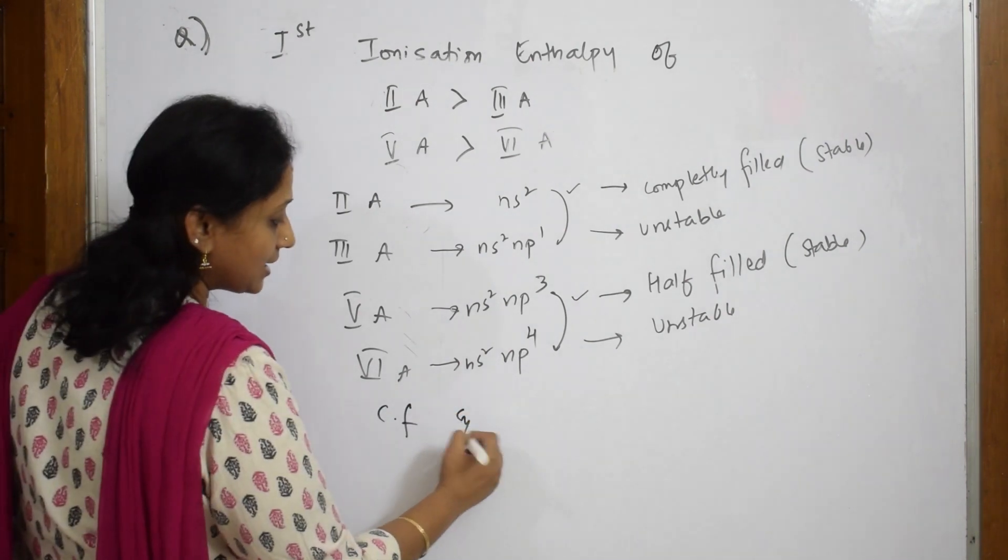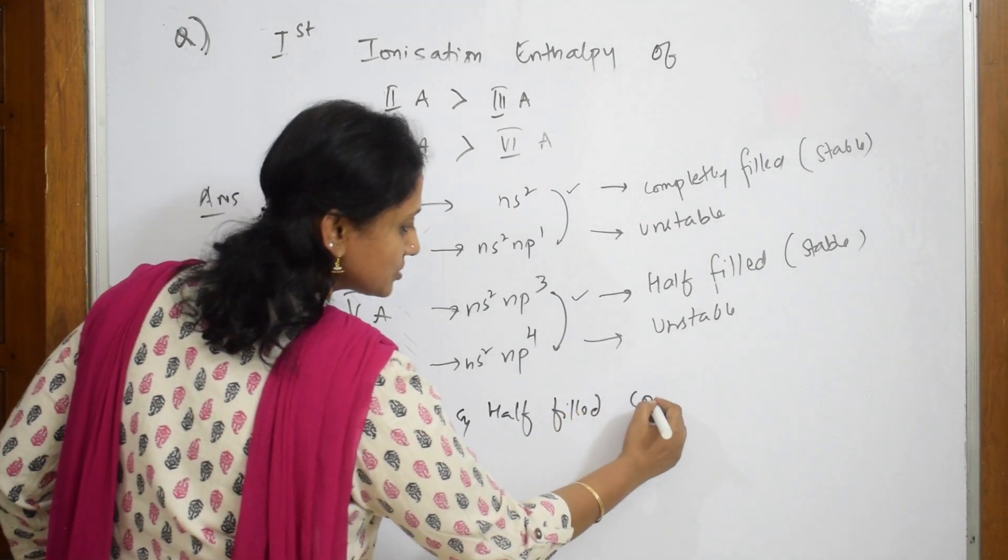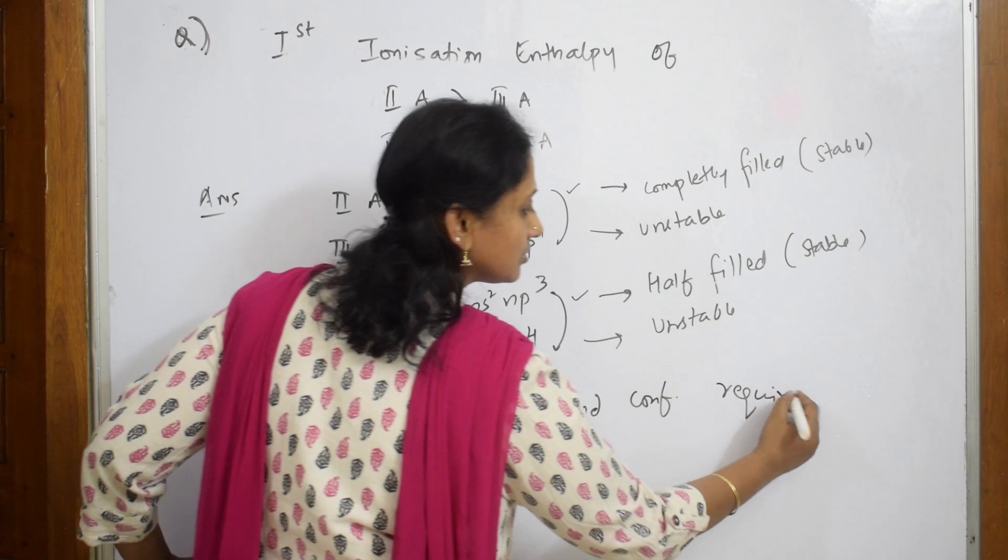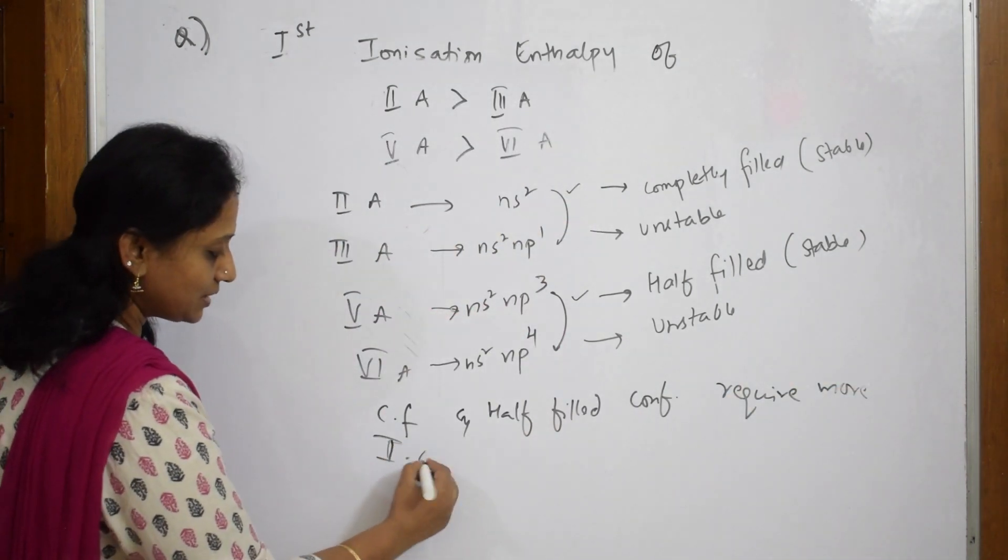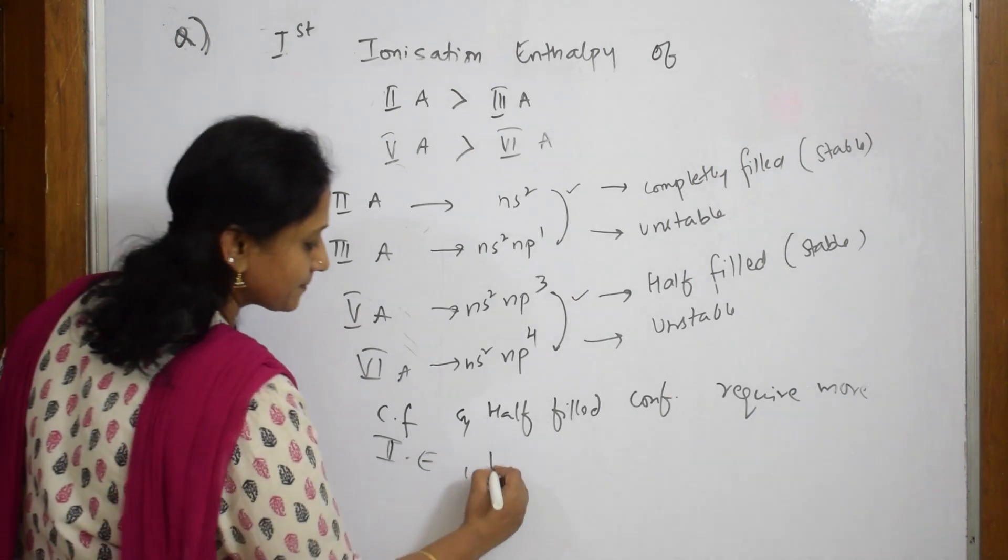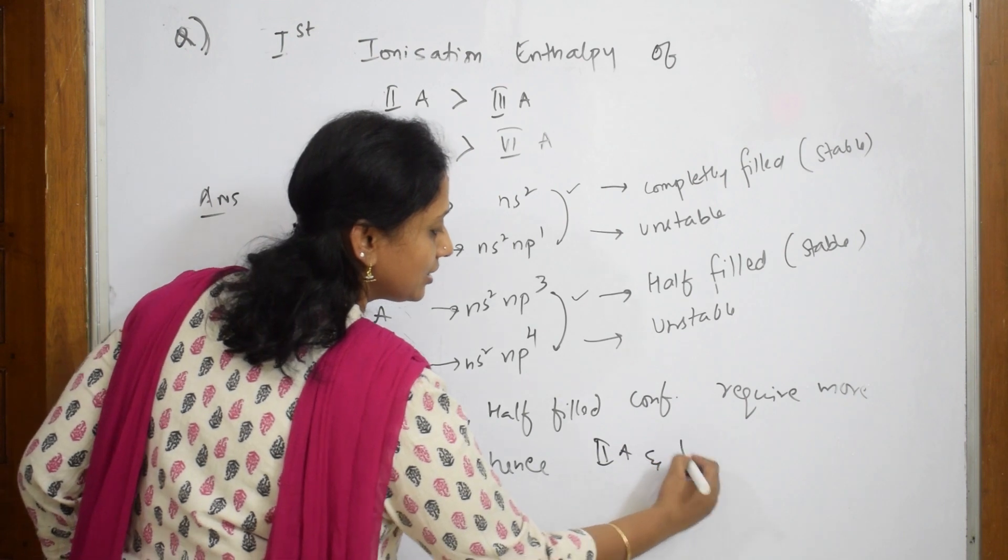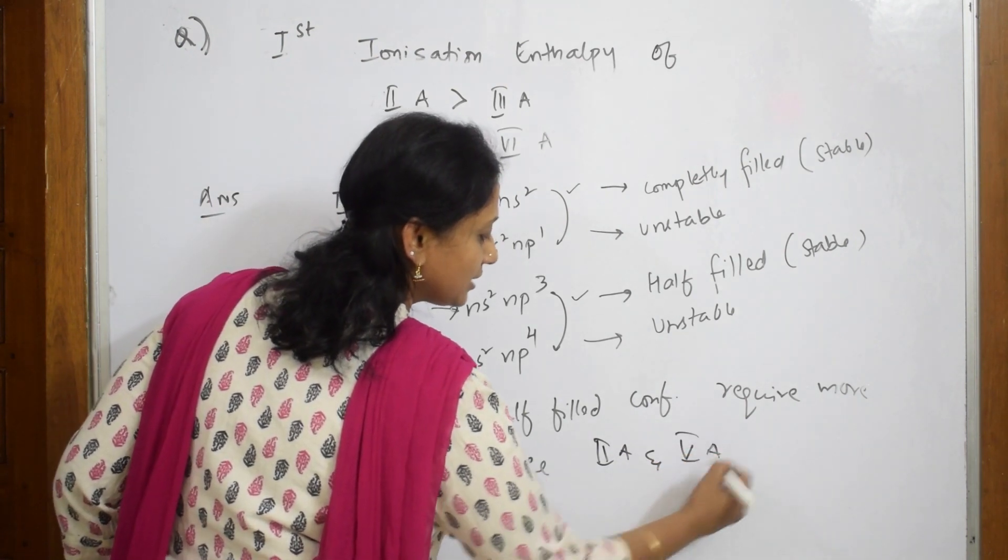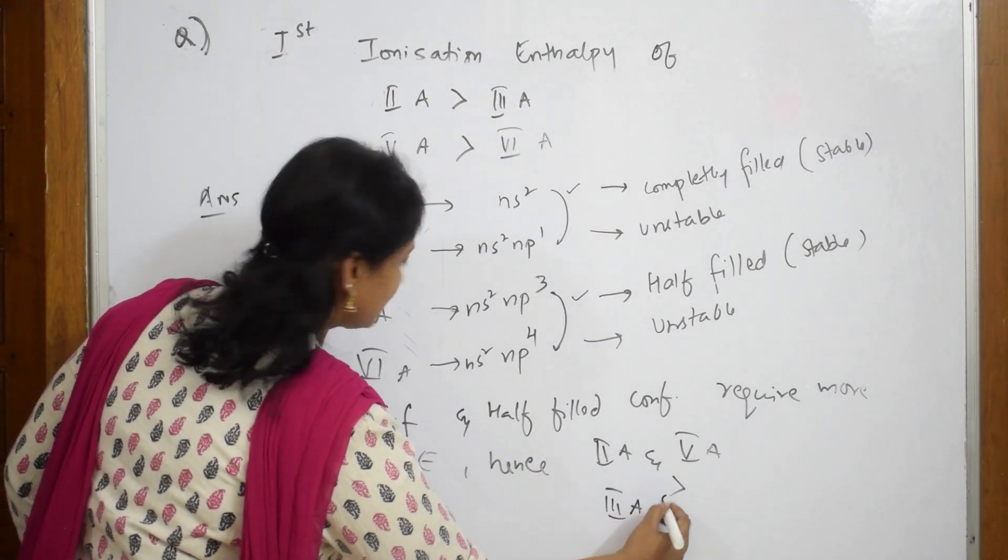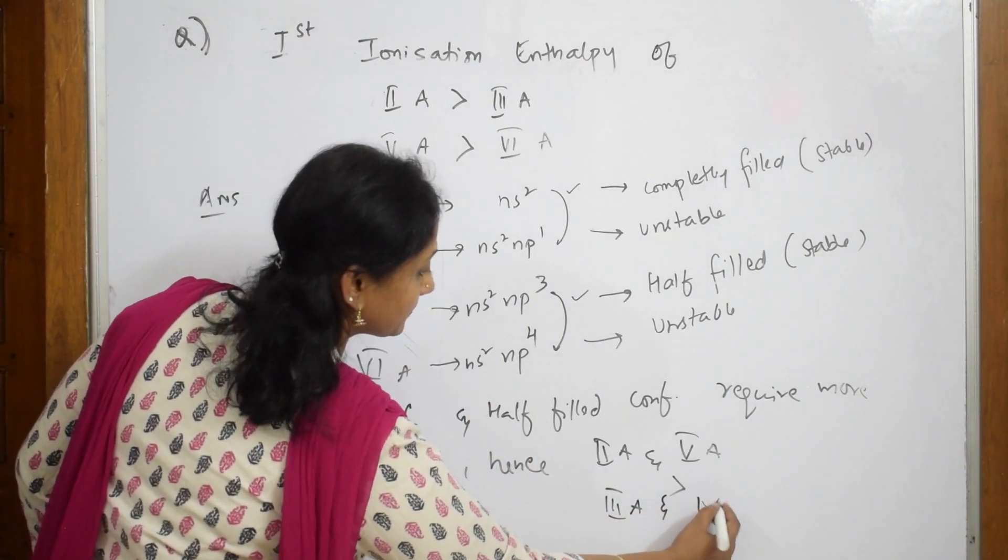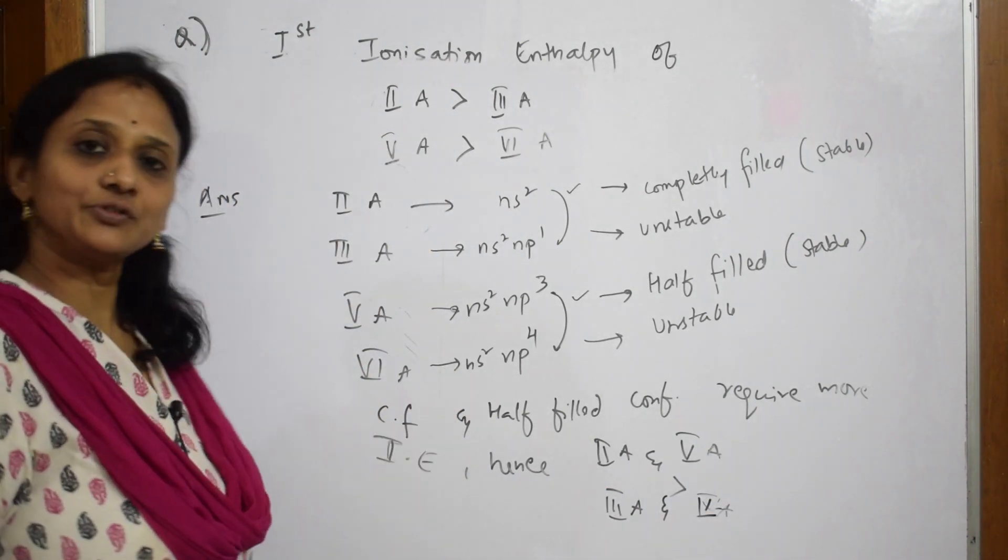Completely filled and half filled configurations require more ionization enthalpies. Hence, 2a and 5a have greater ionization enthalpy compared to 3a and 4a. That's it, simple. This is what you're going to write.